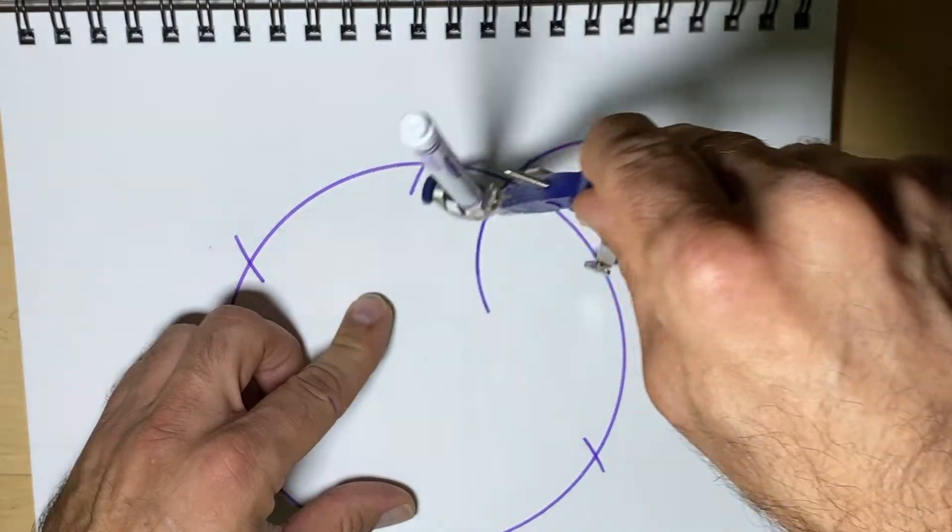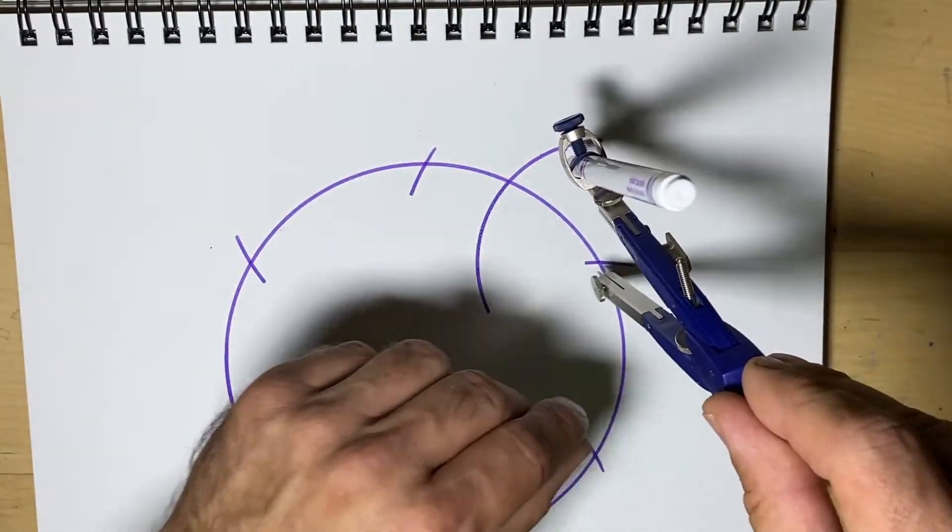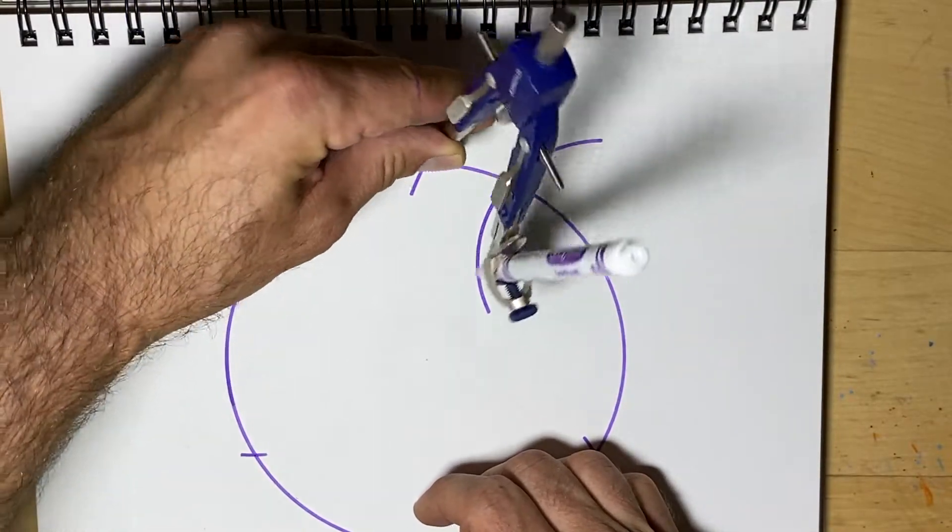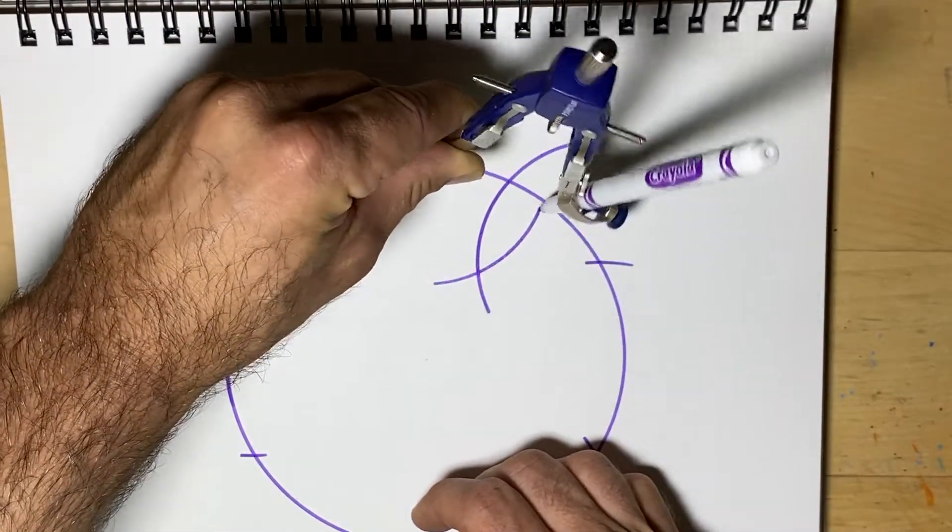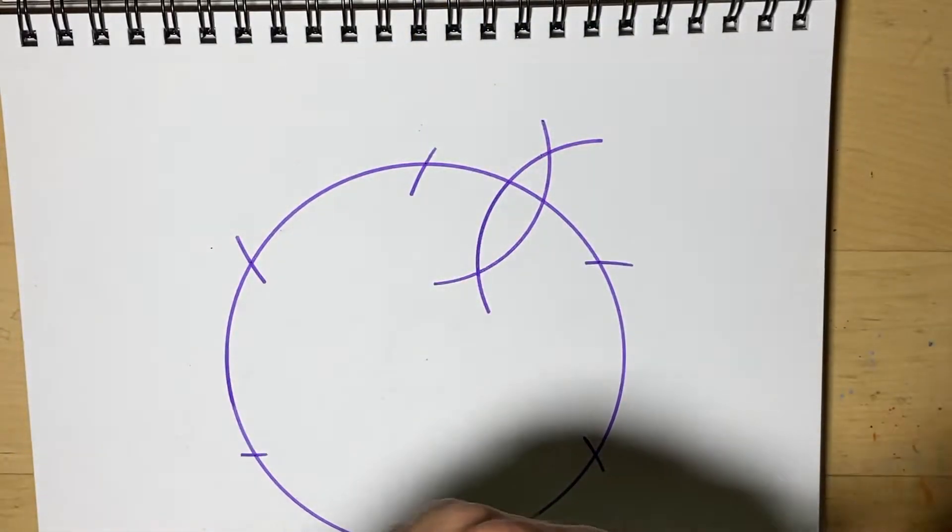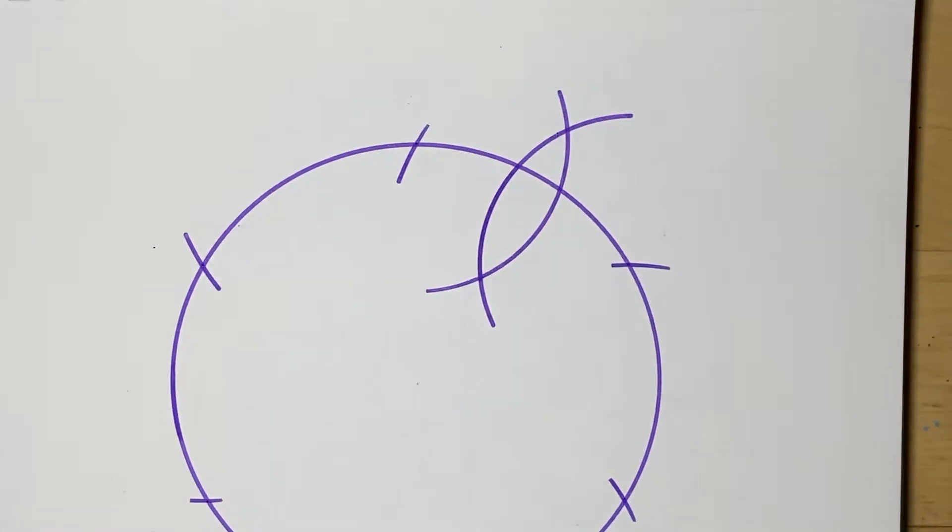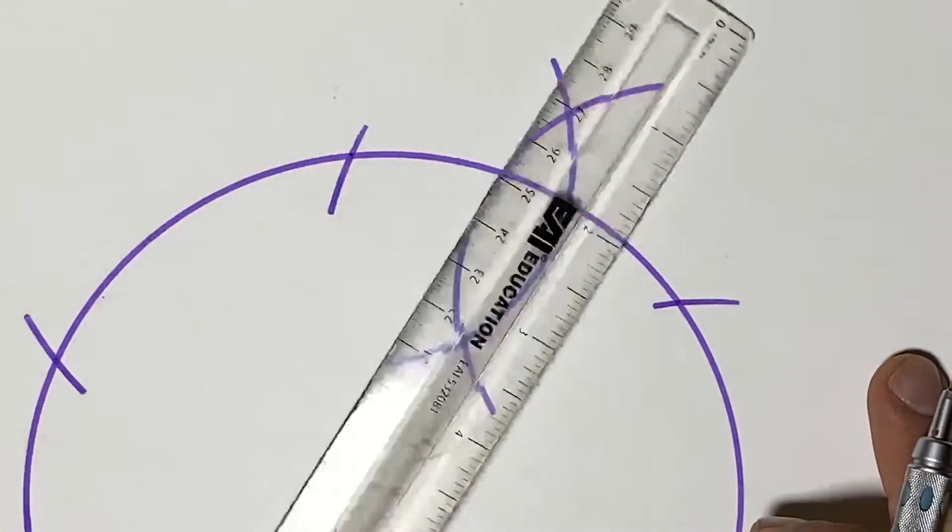And if you don't make it large enough, you can always put it back and do it again. Without closing your compass, you're going to repeat that on the other side. So these two spots are where we're going to line up our ruler so that we can find that middle spot.